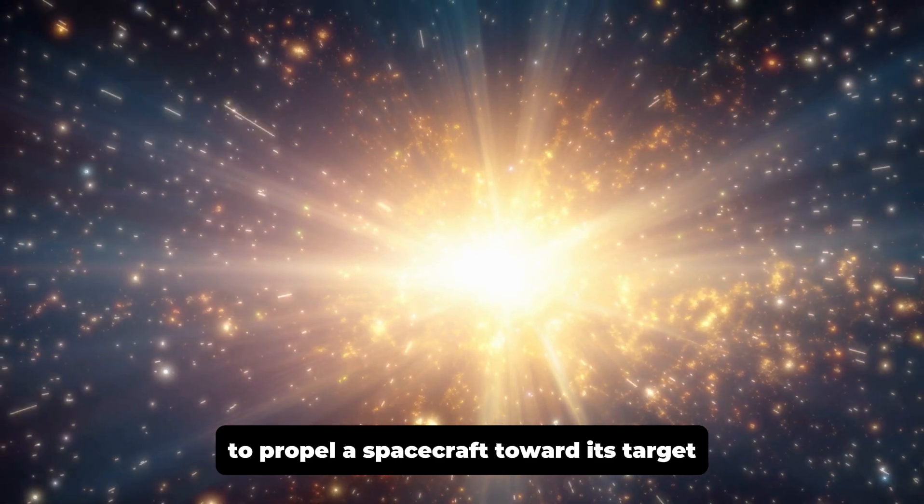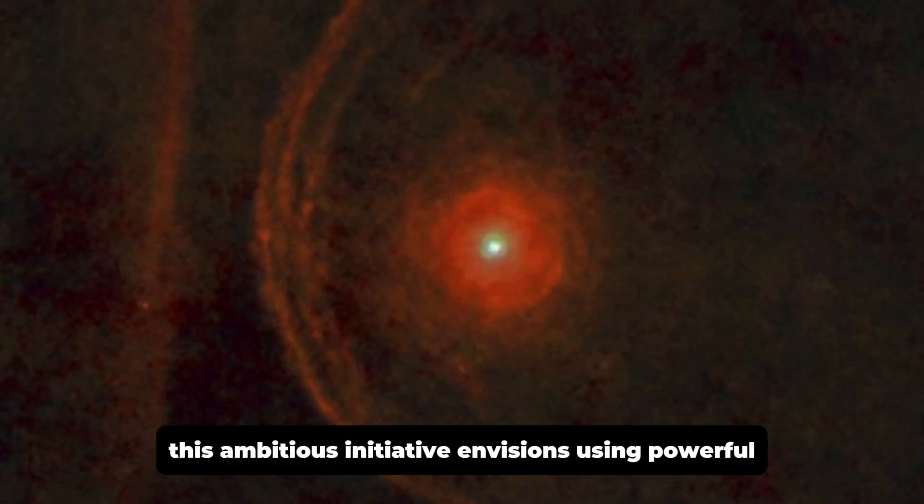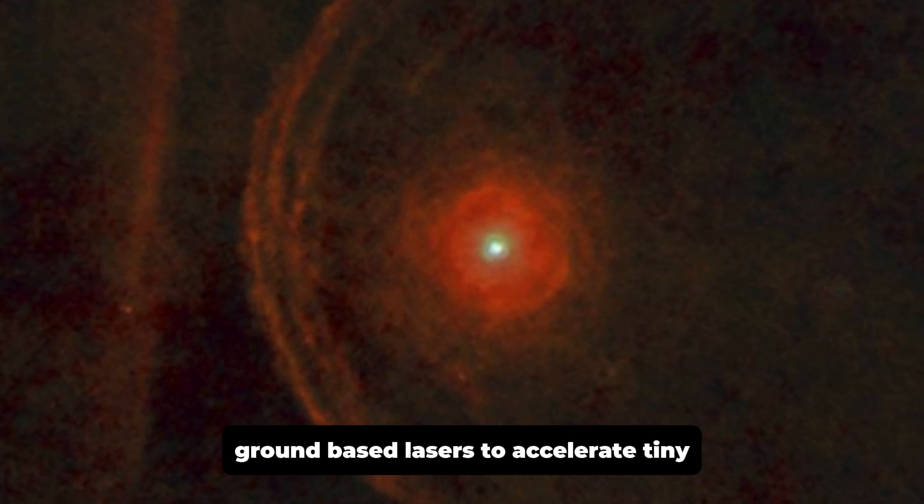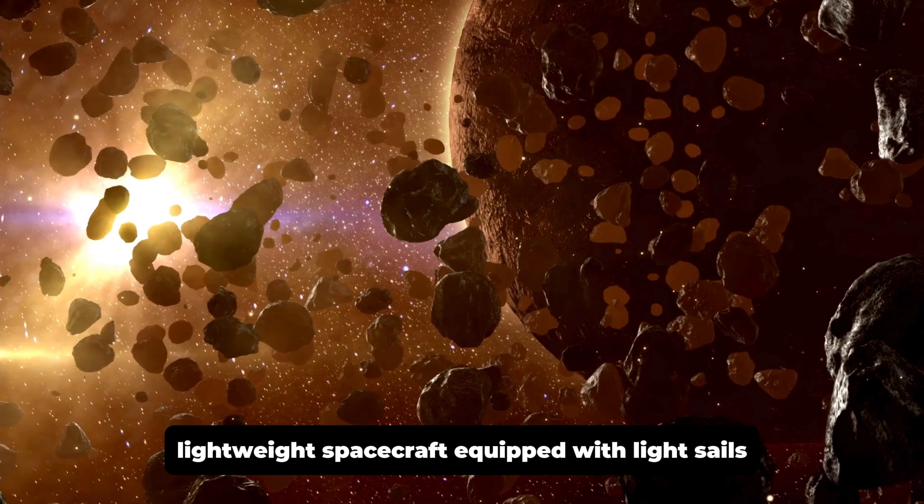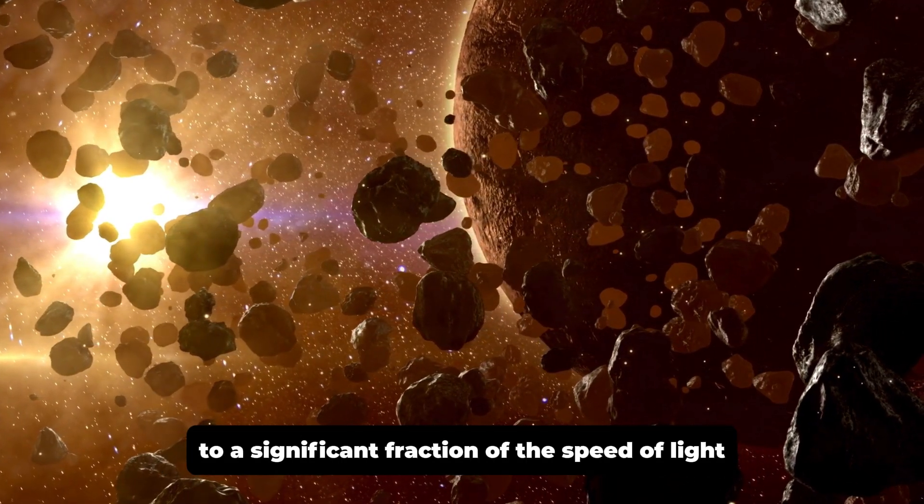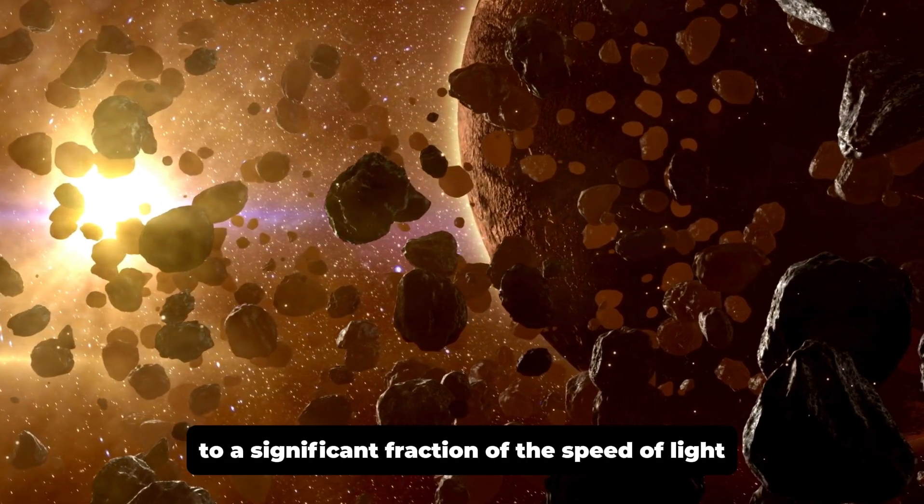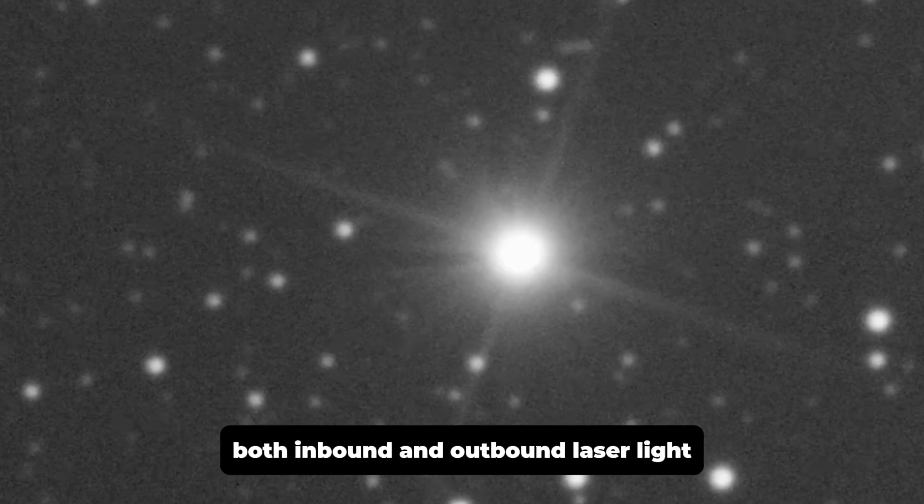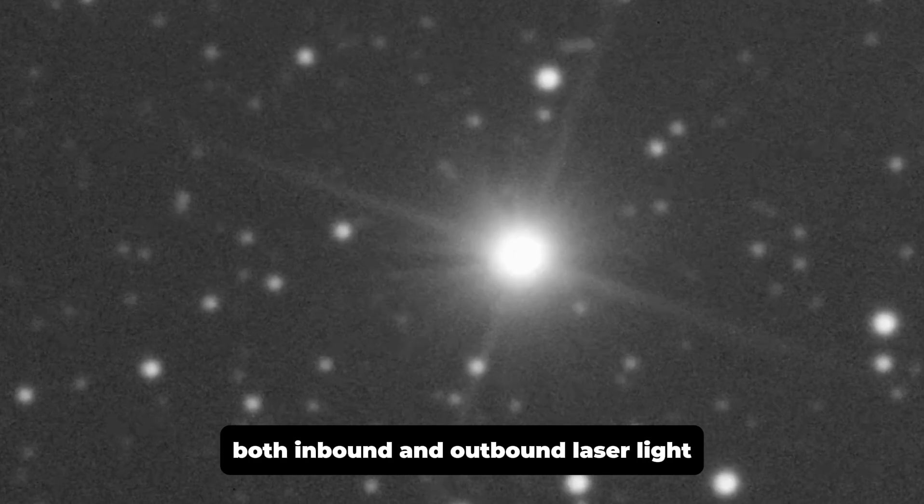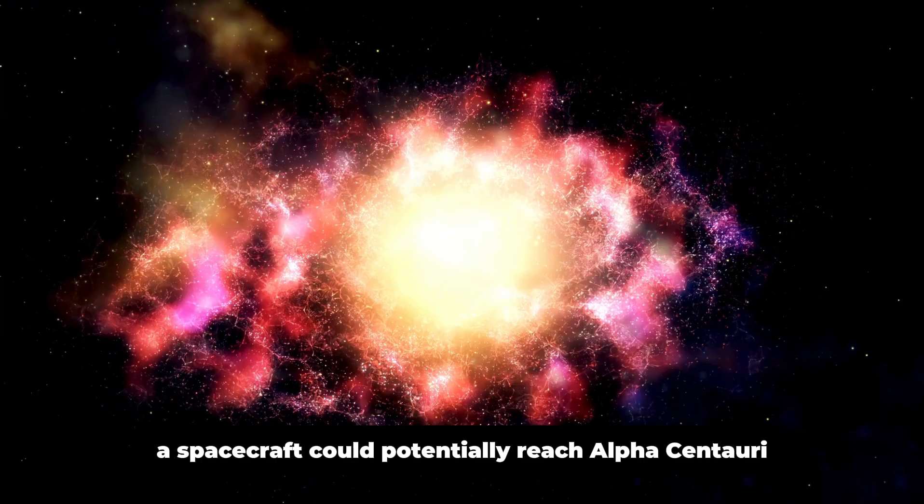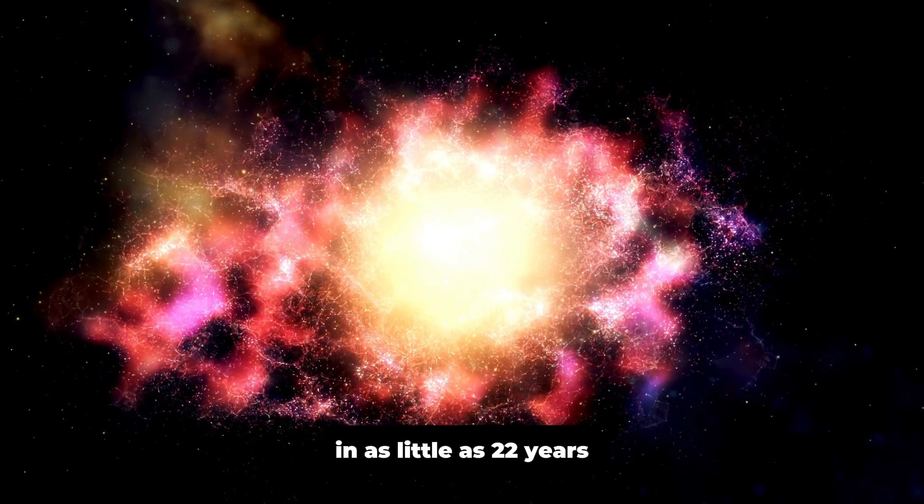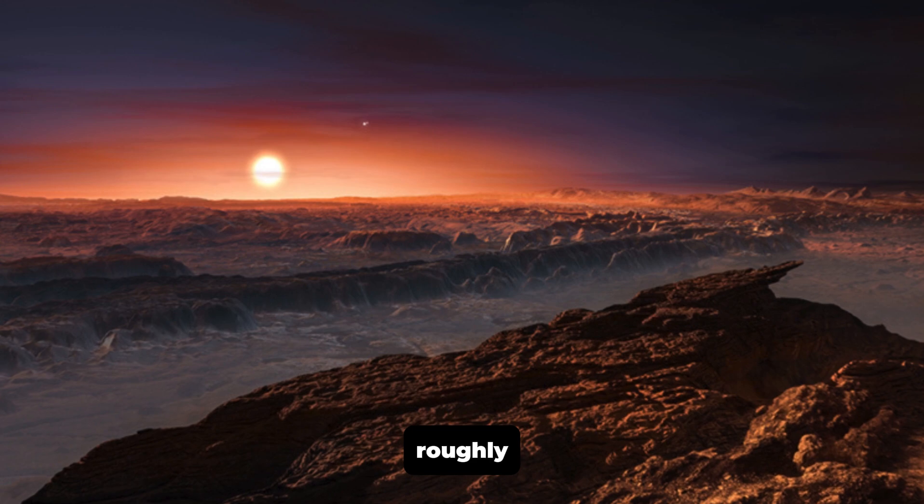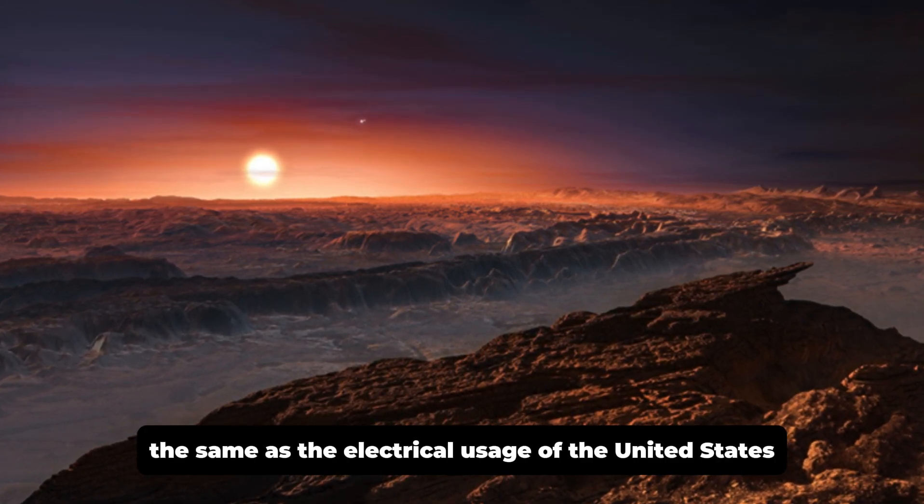The Starshot Project aims to investigate the feasibility of using lasers to propel a spacecraft toward its target, Alpha Centauri. This ambitious initiative envisions using powerful ground-based lasers to accelerate tiny, lightweight spacecraft equipped with light sails to a significant fraction of the speed of light. By overcoming the challenges posed by Earth's atmosphere, which can modulate both inbound and outbound laser light, a spacecraft could potentially reach Alpha Centauri in as little as 22 years using laser power equivalent to 100 gigawatts, roughly the same as the electrical usage of the United States.